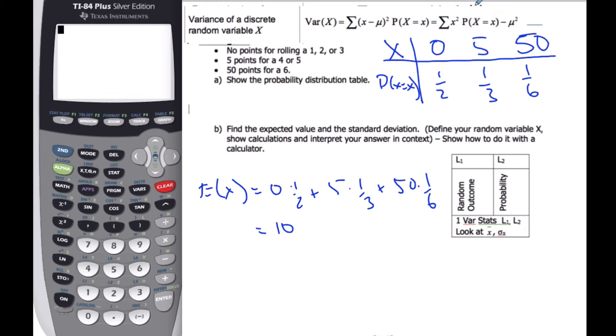So if I take my formula, if I'm going to find the variance, well, my variance of x is going to be, I take this value squared, so it's the sum of zero squared times a half, plus 5 squared times a third, plus 50 squared times one sixth. All of that subtract 10 squared.